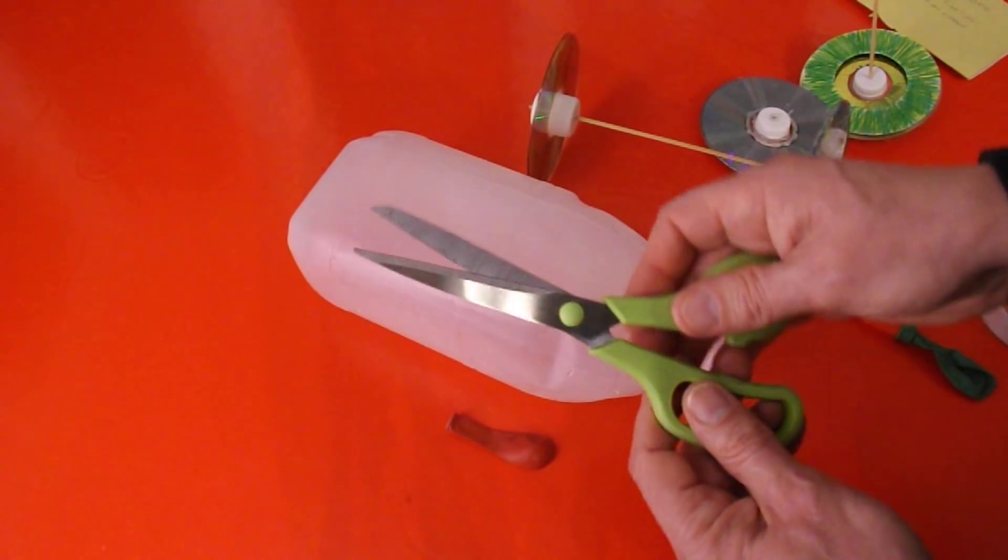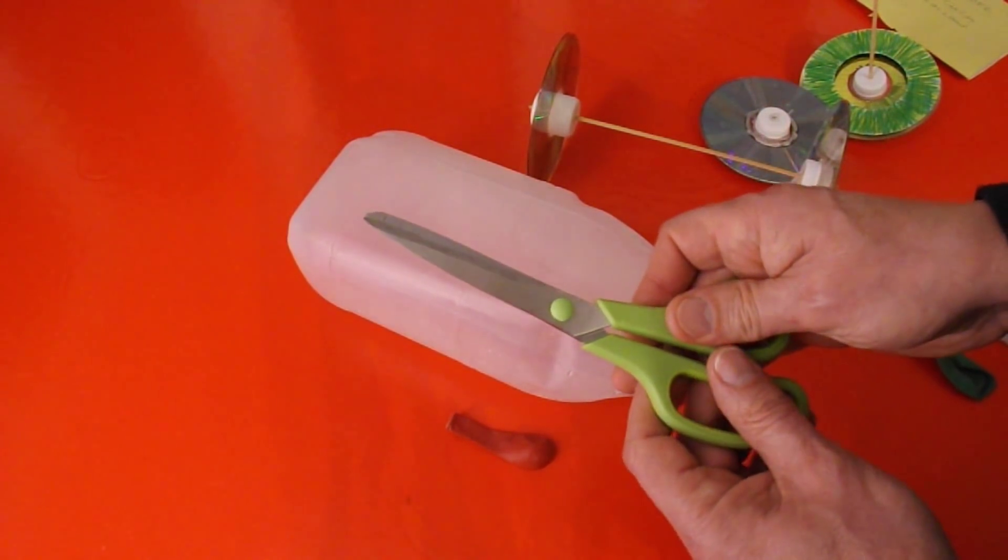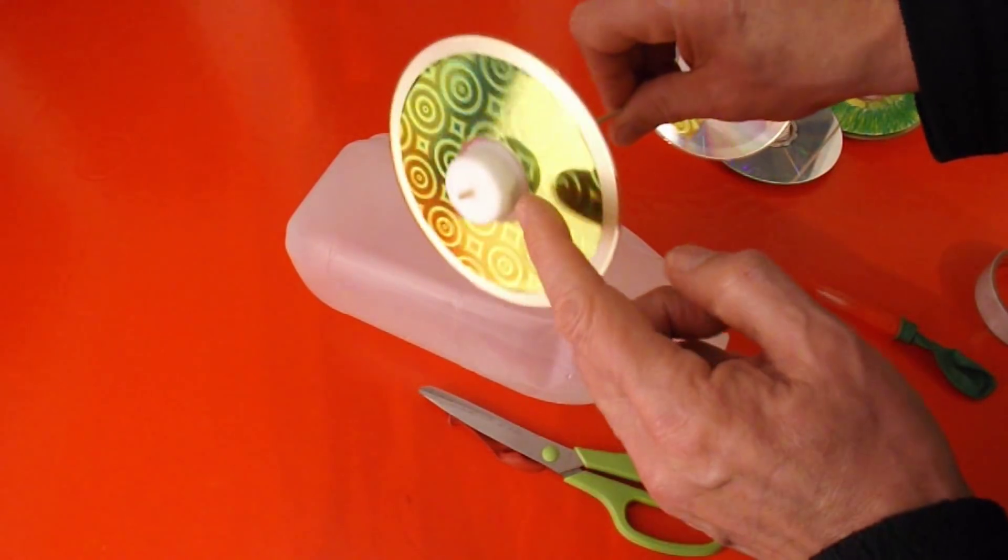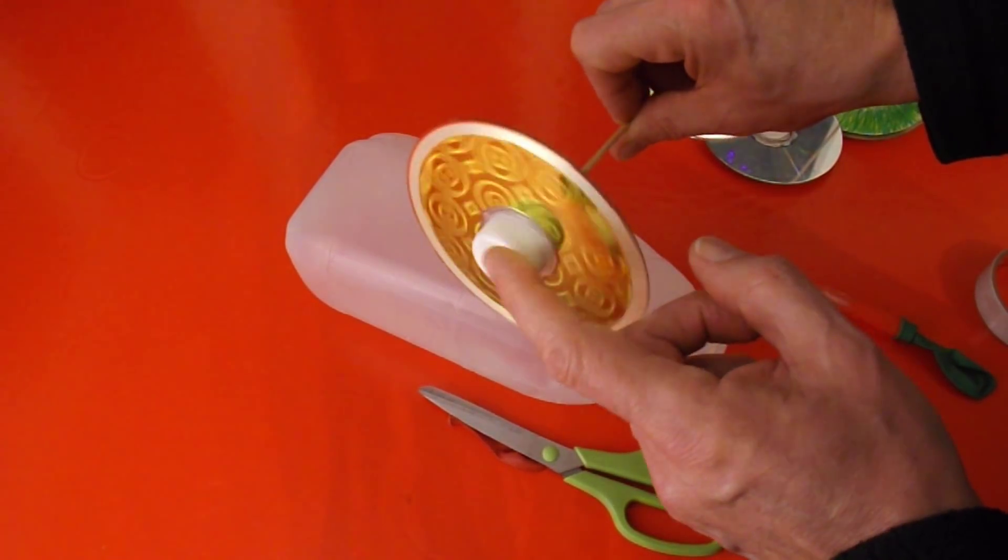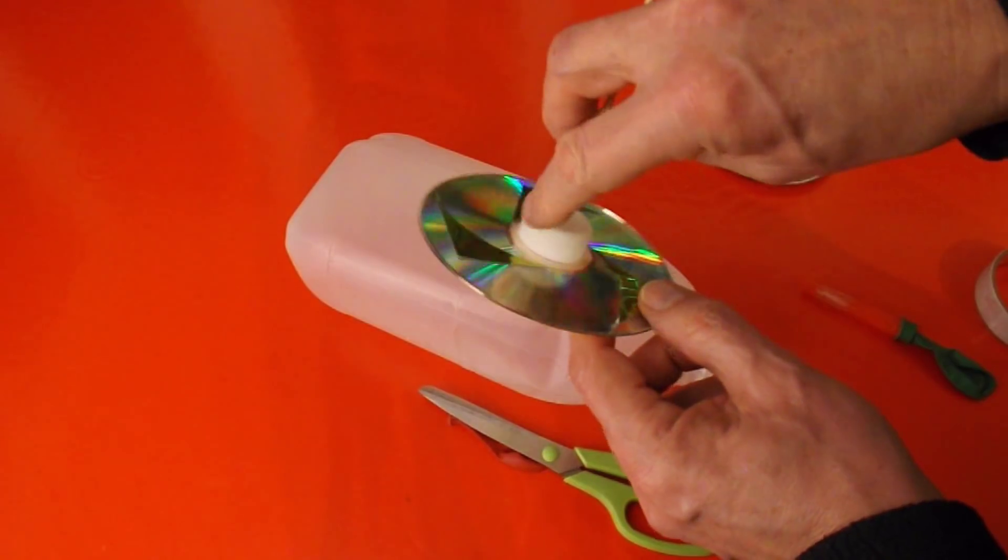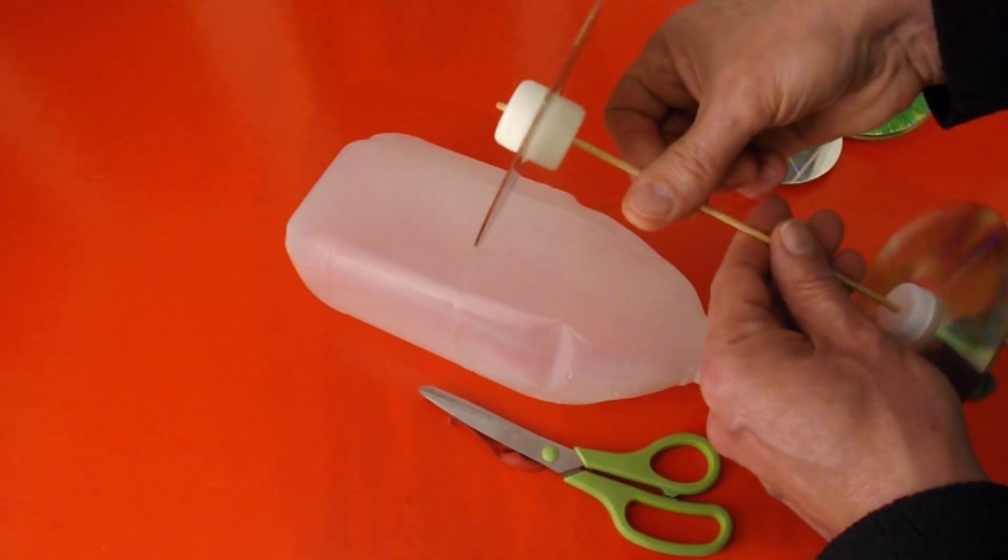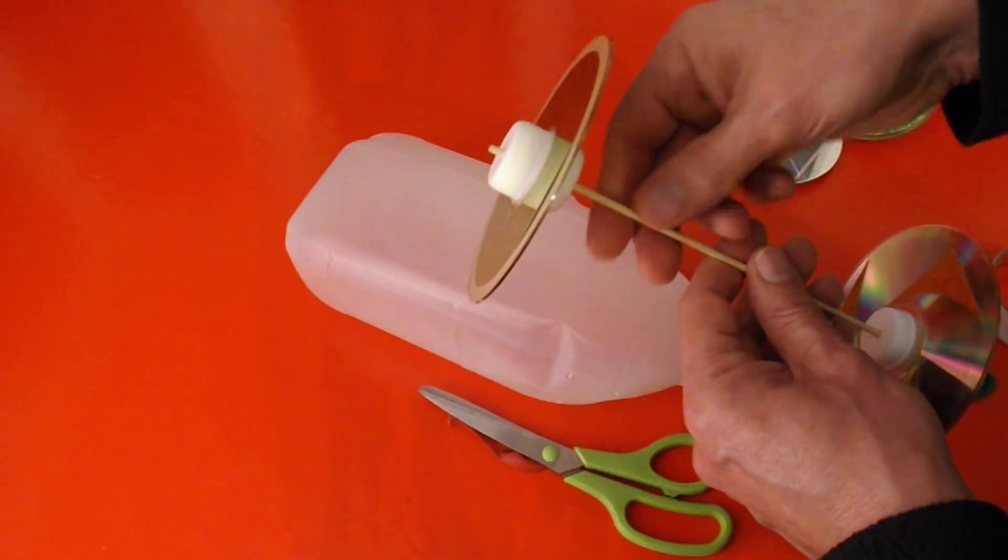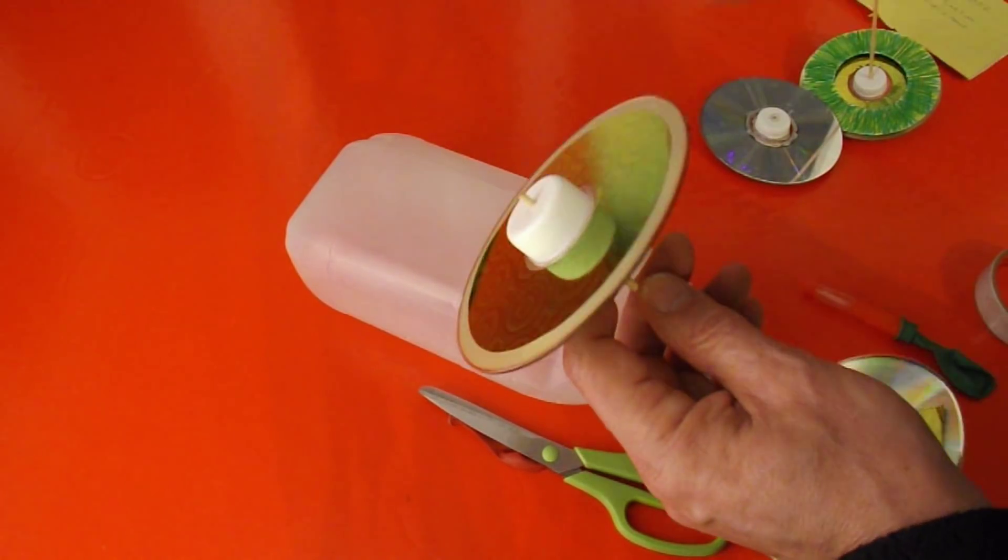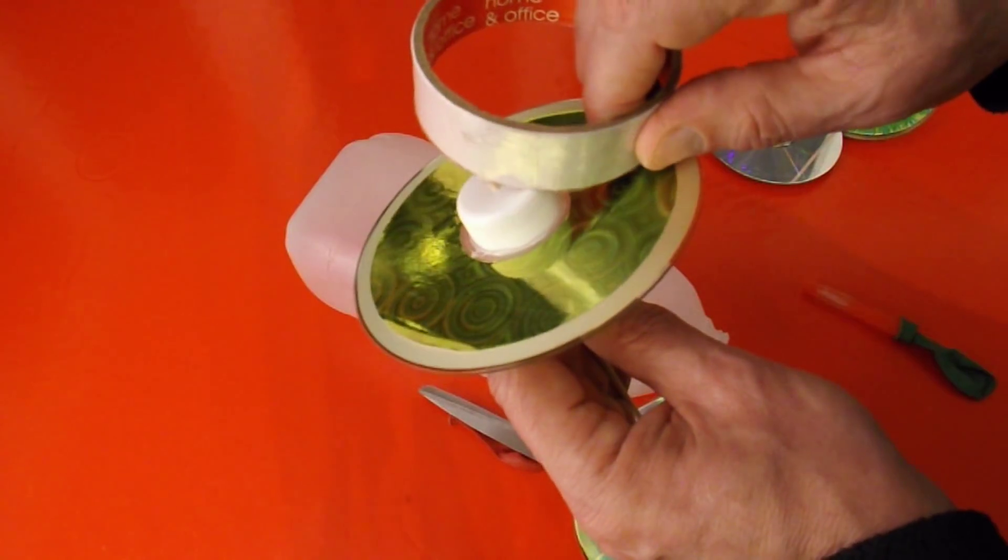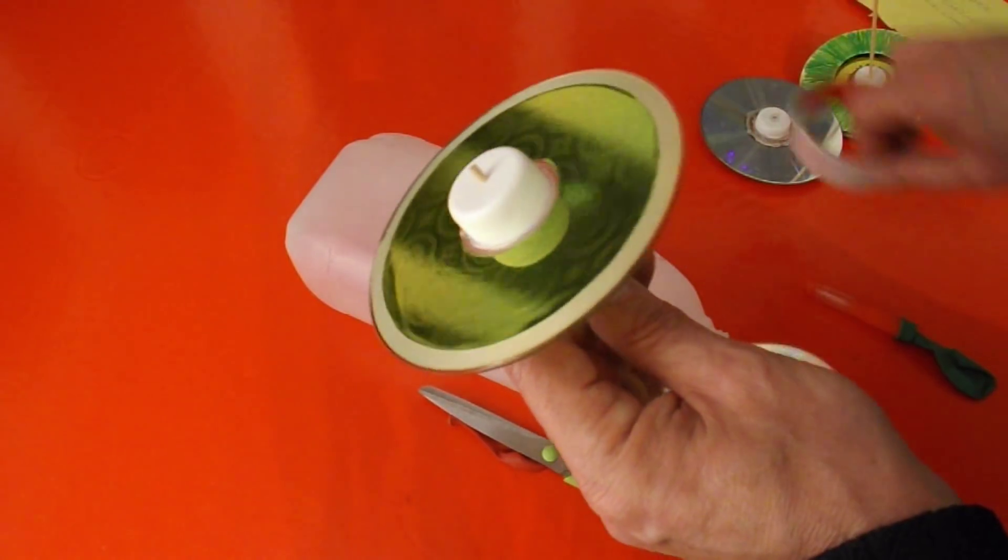The only tool I intend to use is these scissors. But obviously I've already used a hot glue gun to stick the bottle tops onto the CDs. If you haven't got a hot glue gun then you'll have to find some sort of glue. You could potentially tape them on but it doesn't work very well.